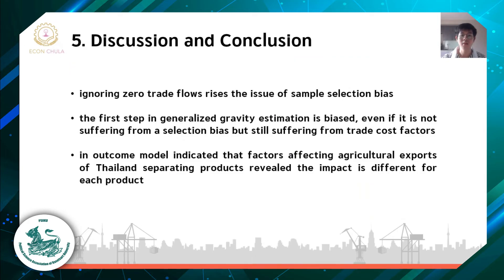Discussion and Conclusion. Ignoring zero trade flows raises the issue of sample selection bias. The first step of gravity estimation is biased, and even if it is not suffering from selection bias, it still suffers from the trade cost factor. The outcome models indicate that factors affecting agricultural exports of Thailand, when separated by product, reveal different impacts for each product.